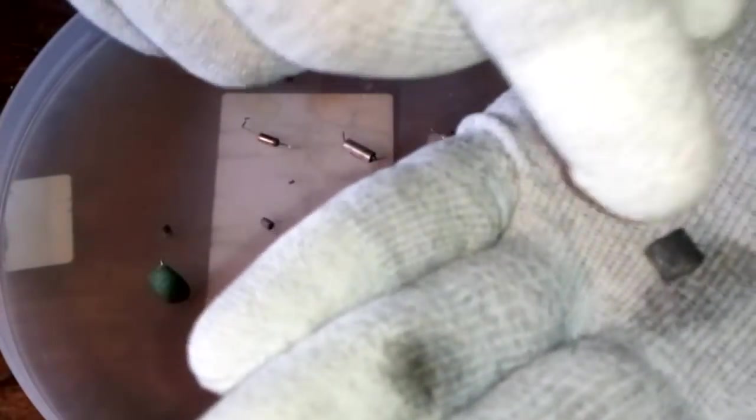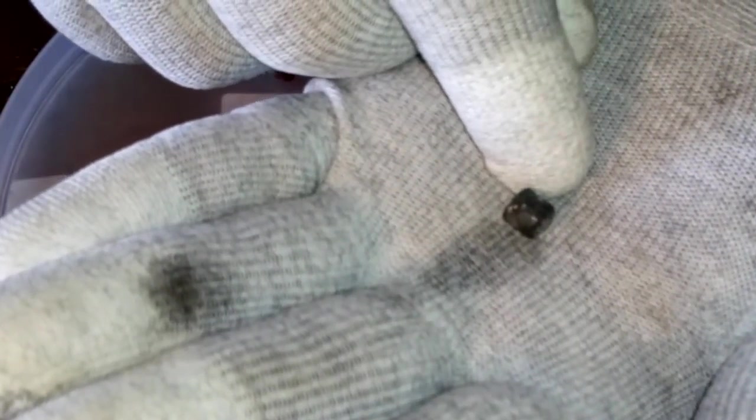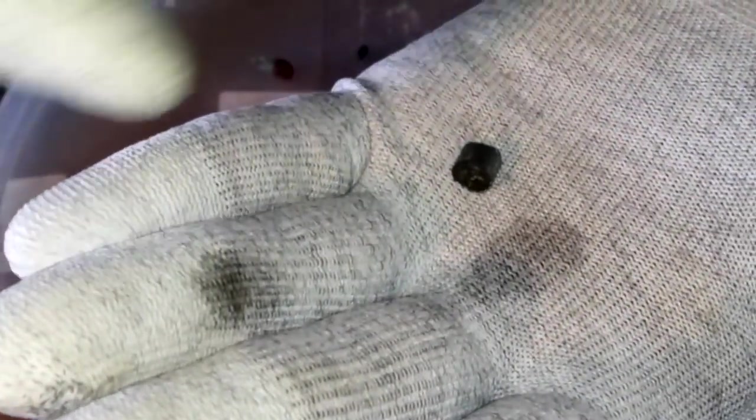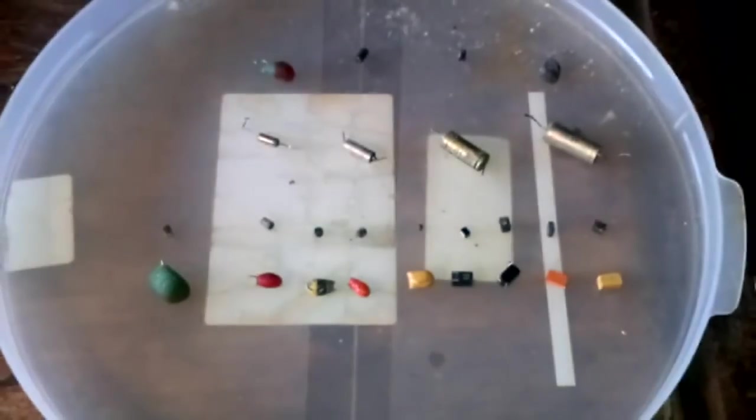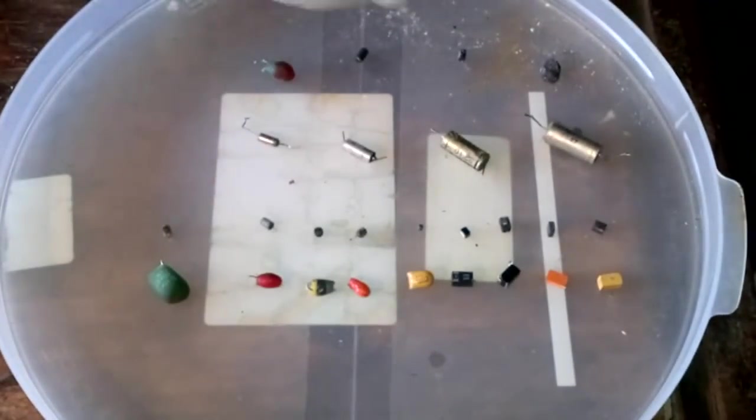So if you collect a kilogram of these in Russia or Ukraine, you can get maybe 150, 200, 250 dollars. It's actually a tantalum, it's a thousand dollars and more, but it's everything about the black market.